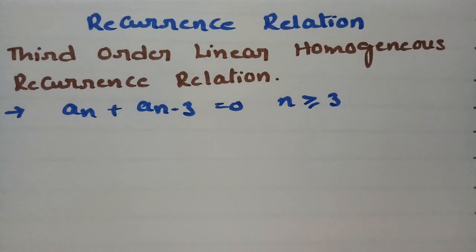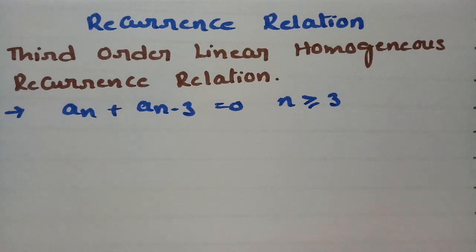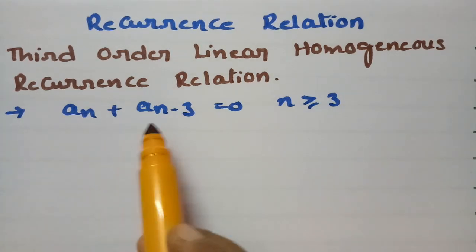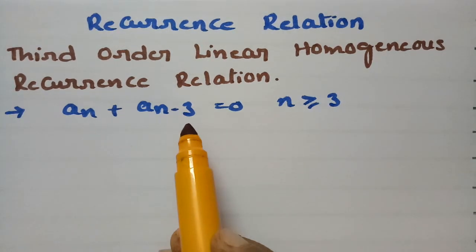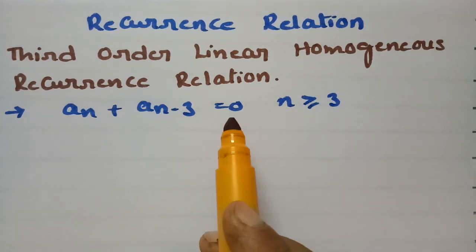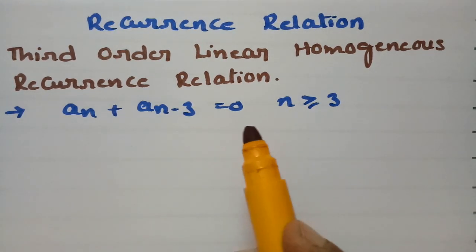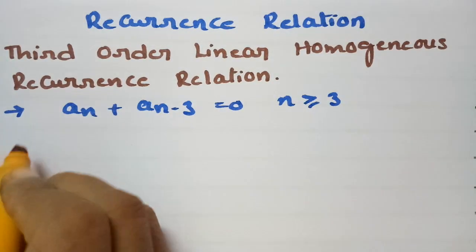In today's video, I am going to explain the solutions for third order linear homogeneous recurrence relations, which is related to discrete mathematics. We have to solve the recurrence relation aₙ + aₙ₋₃ = 0 where n is greater than or equal to 0.